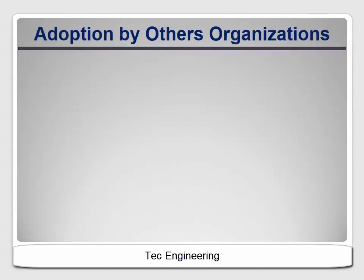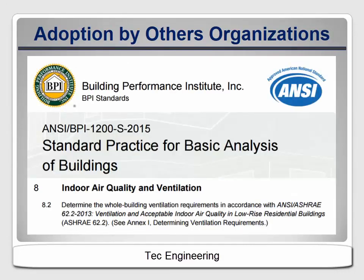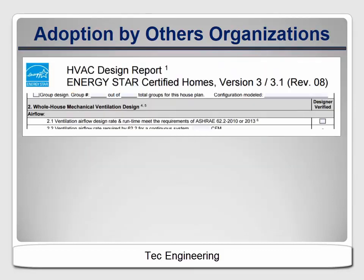As seems to be typical for the residential building industry, we can't seem to all agree on a common standard, so different programs have adopted different versions of ASHRAE 62. The BPI Building Analyst Standard still references the 1989 version. The newer BPI 1200 standard references the 2013 version. The standard work specifications created by the U.S. Department of Energy and NREL to guide the weatherization assistance program require the use of the latest version within one year of release — so agencies must transition to the 2016 version by the end of 2017. ENERGY STAR for new homes gives participating builders the option to choose between the 2010 and 2013 versions of ASHRAE 62.2.